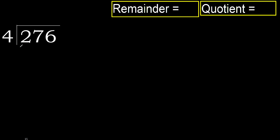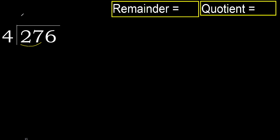276 divided by 4. 2 is less, so next, 27 — 27 is not less. With 27 and 4, multiply by which number is nearest to 27 but not greater: 4 multiplied by 6 is 24, which is not greater. Subtract to get 3.